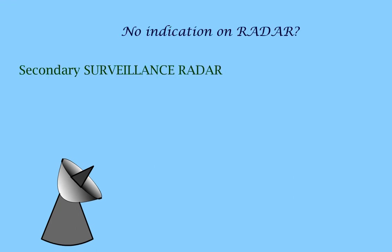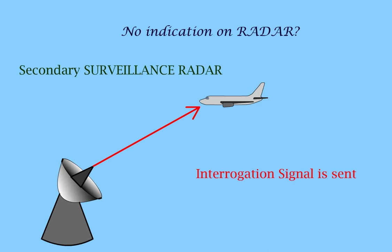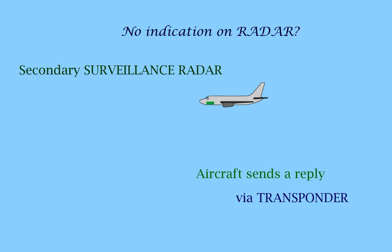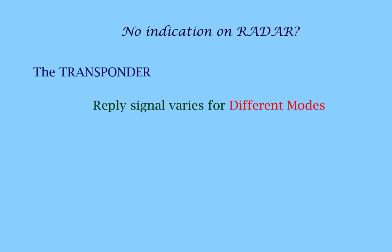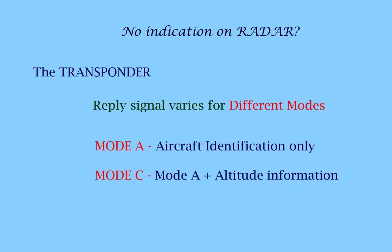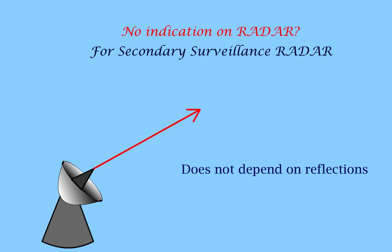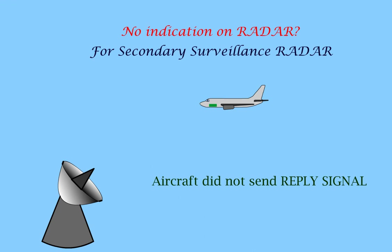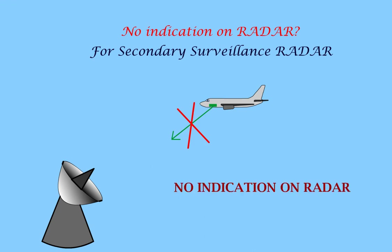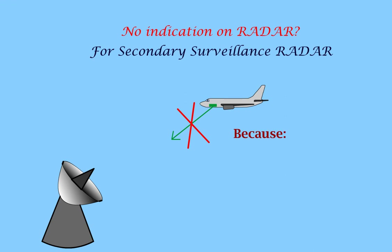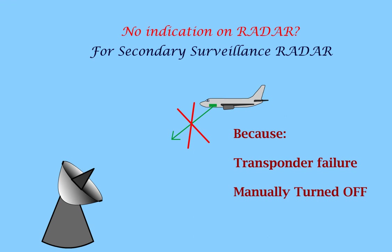In a secondary surveillance radar, an interrogation signal is sent from the ground. The aircraft then sends a reply signal via a transponder. The signals from the transponder vary for different modes. Mode A sends the aircraft identity only. Mode C sends the aircraft identity plus altitude information. Mode S sends identity, altitude information and other data. The secondary radar does not depend on reflected waves, so if an interrogation signal is sent and the aircraft does not send a reply signal, then there will be no indication on the radar. This could be because of a failure of the transponder, or if it was manually turned off.